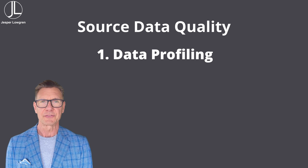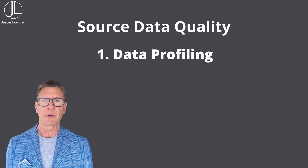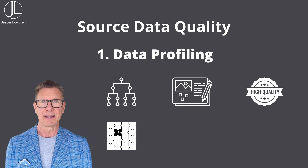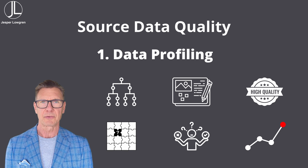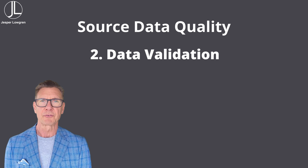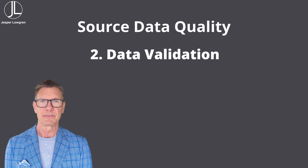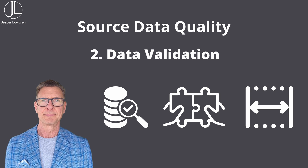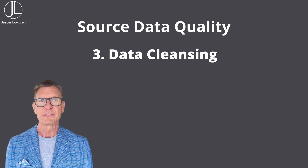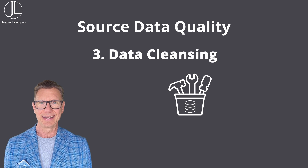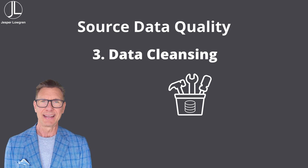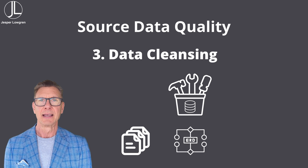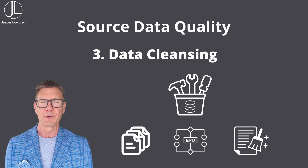The first step is data profiling, which involves examining the existing data to understand its structure, content, and quality. It helps identify issues like missing values, inconsistent formats, or outliers. The second is data validation, which involves running validation rules to identify data quality issues — checking for data accuracy such as correct data types and value ranges. The third is data cleansing, which involves correcting or removing incorrect, incomplete, or irrelevant data. Techniques include deduplication, which removes duplicates, normalization, which structures the data, and correction of errors identified during profiling and validation.